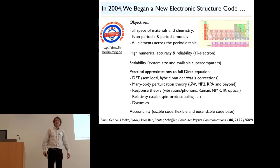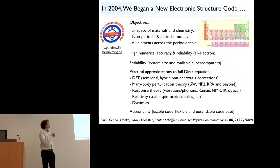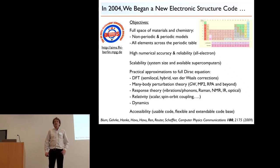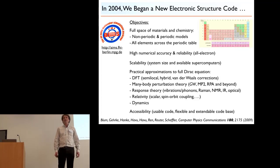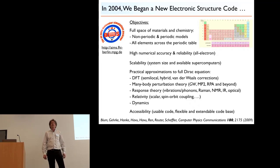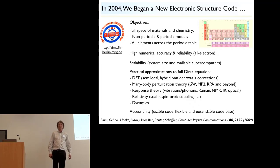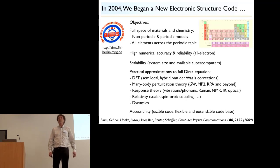This is an all-electron code, and we started this in 2004. My reason for doing this — and I think the others too — was specifically that we wanted to get reliable calculations for the entire periodic table at reasonable cost. And for various reasons, we chose to go all-electron at the time.